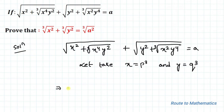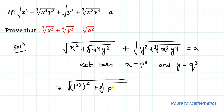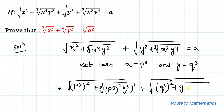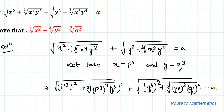So our equation becomes √((p³)² + ∛((p³)⁴ · (q³)²)) + √((q³)² + ∛((p³)² · (q³)⁴)) = a.